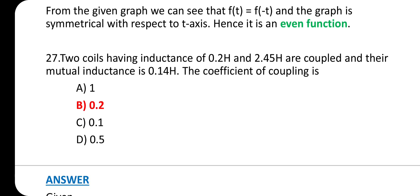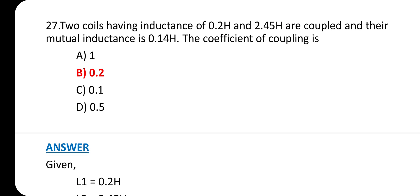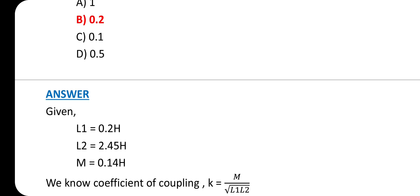Question 27: Two coils having inductance 0.2 henry and 2.45 henry are coupled and their mutual inductance is 0.14 henry. The coefficient of coupling is? Answer is option B. The coefficient of coupling k between two coils is defined as the fraction of magnetic flux produced by current in one coil that links to the other. For two coils with self-inductance L1 and L2 and mutual inductance M, the coefficient of coupling k is given by k = M/√(L1×L2).